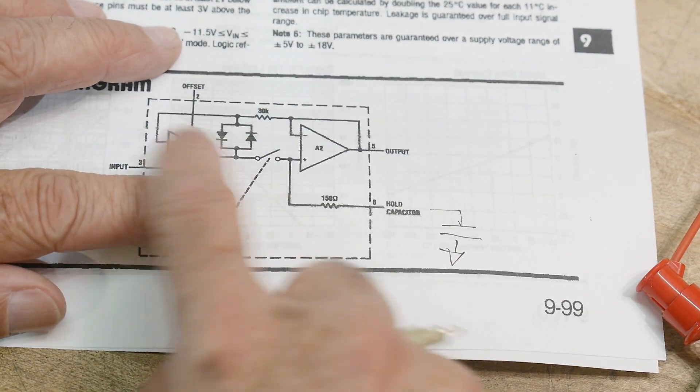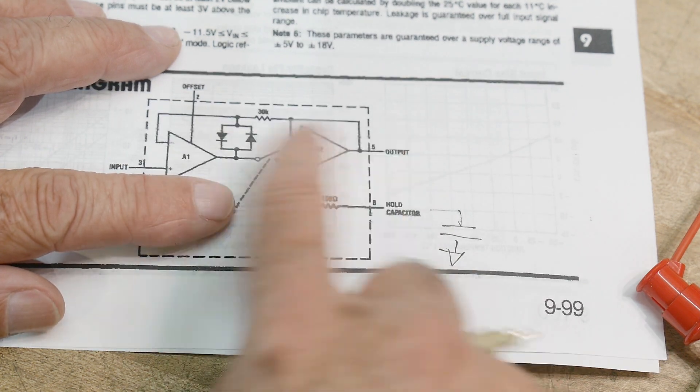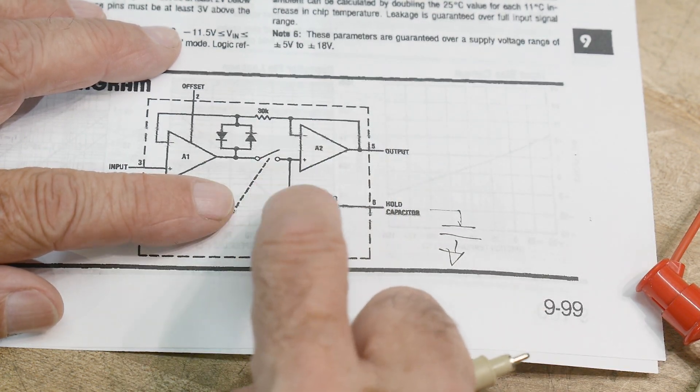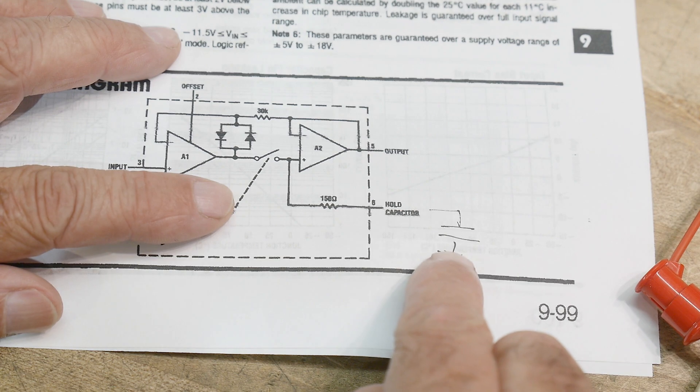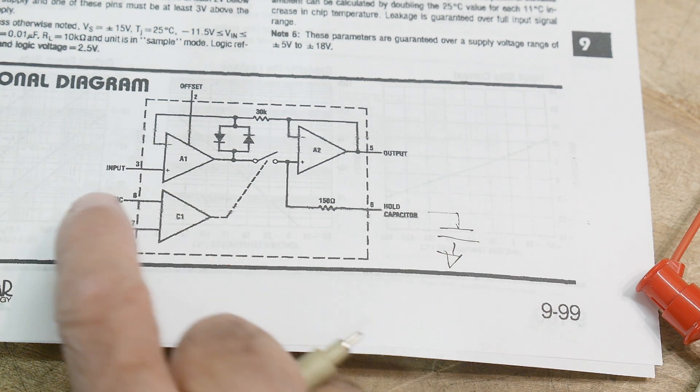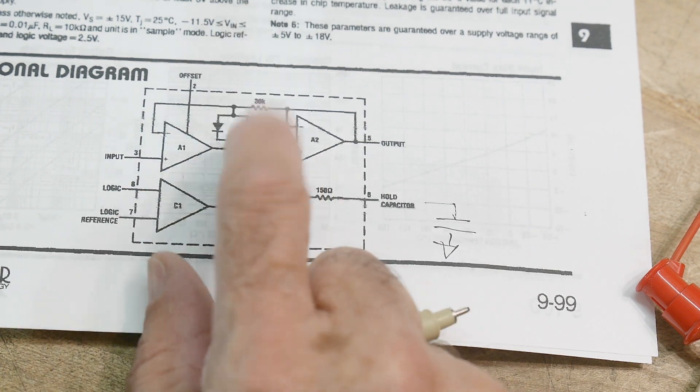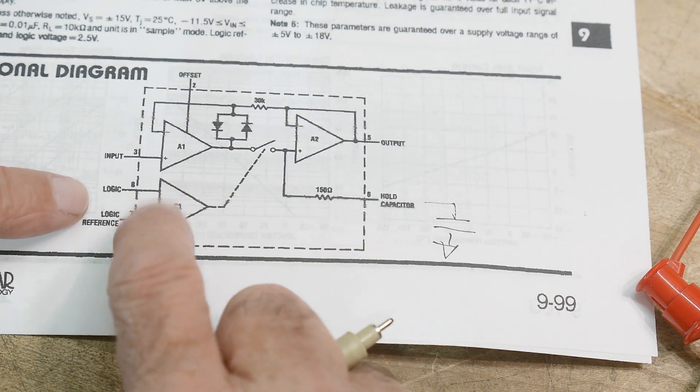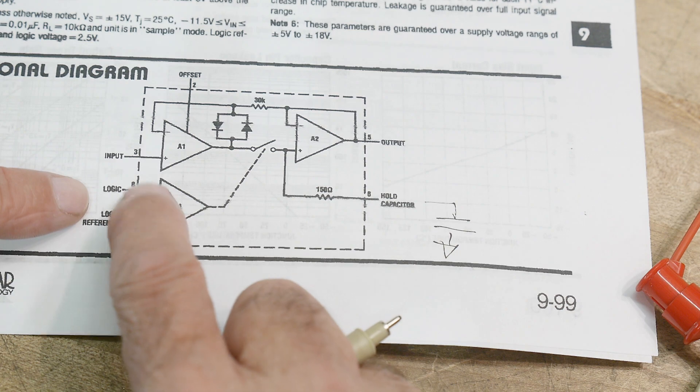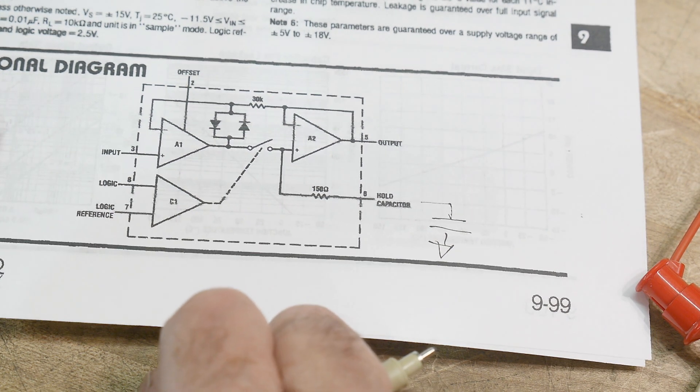So whenever that switch closes it feeds through real time, but you open that switch and it's just going to stay wherever that capacitor is. And you can run this thing with a logic level. So you can have plus or minus 12 on the part and run it with a CMOS or TTL as the logic input to turn that switch on and off.